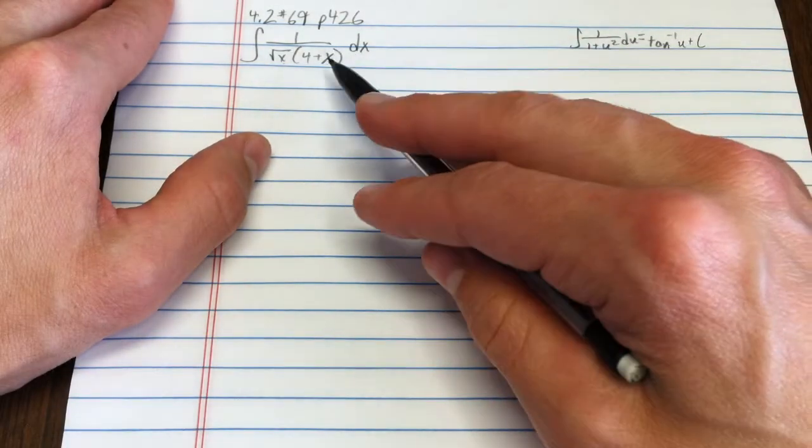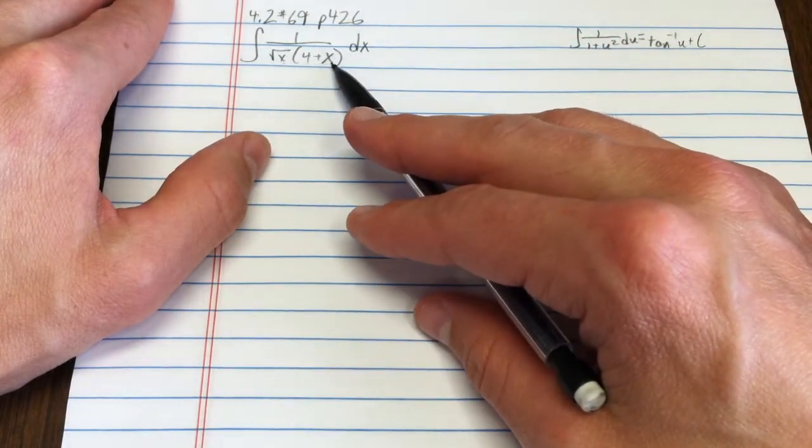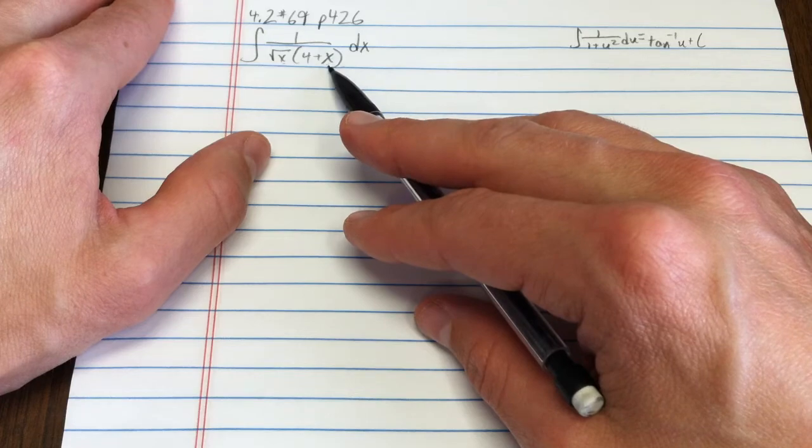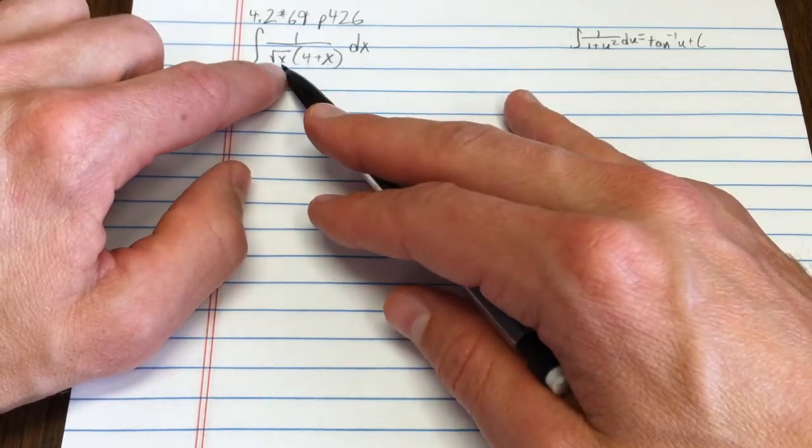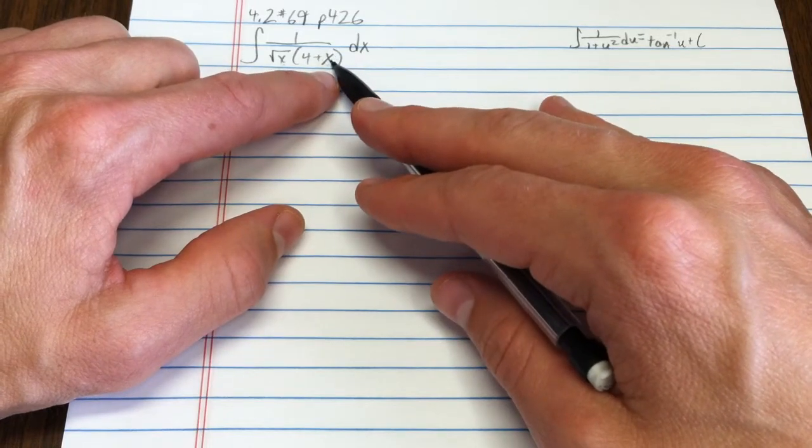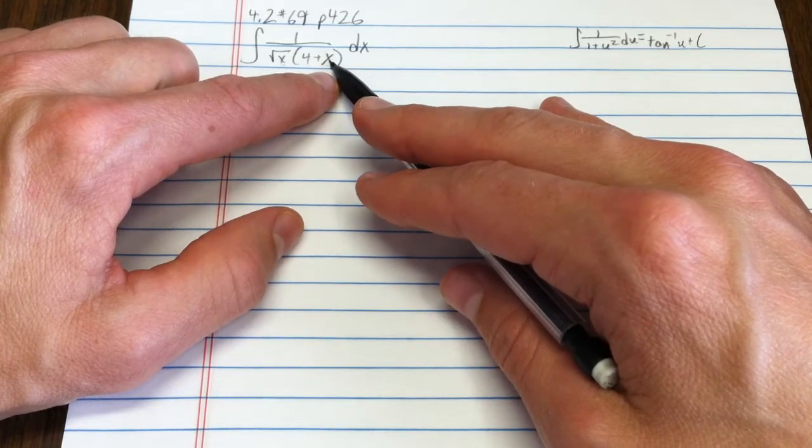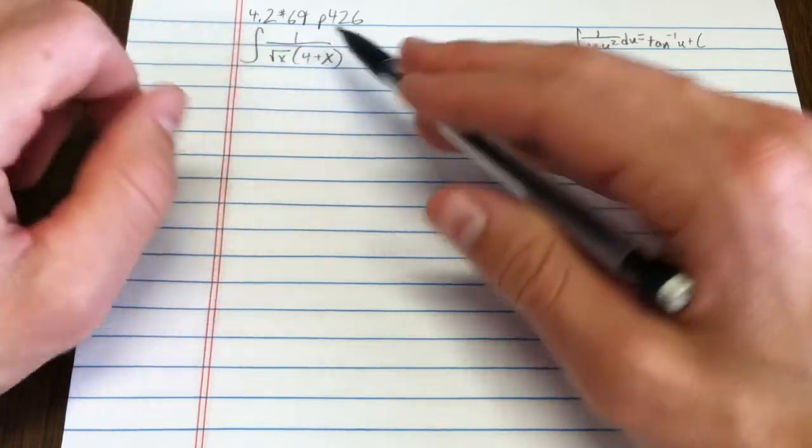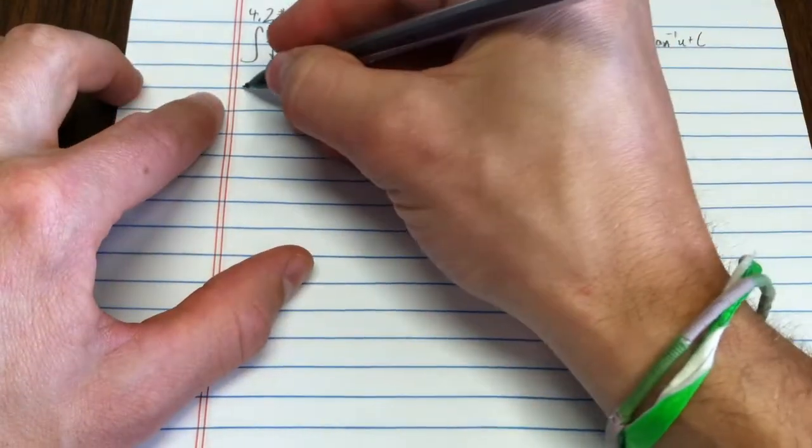Could we manipulate this in such a way that that would happen, and that this would somehow be our du? I can sort of see my way clear to do that, because this is square root of x squared, but that's not a 1. So let's work at making that a 1 for a moment.